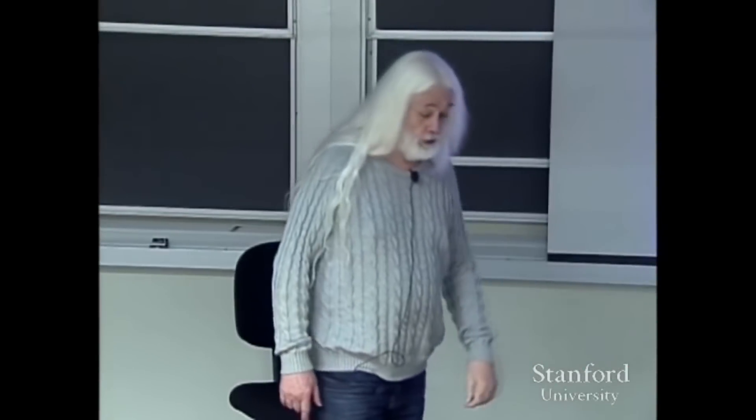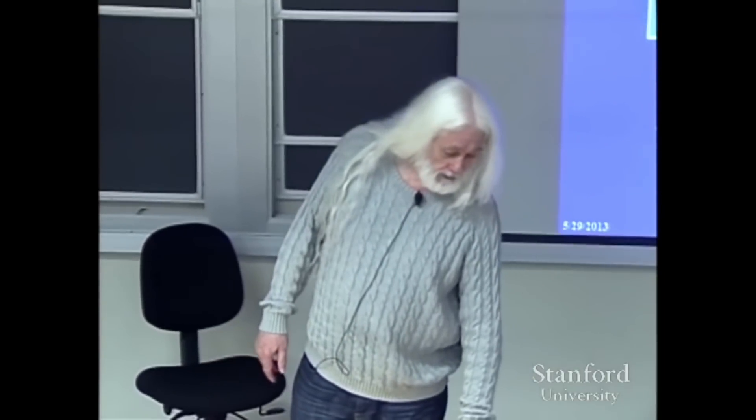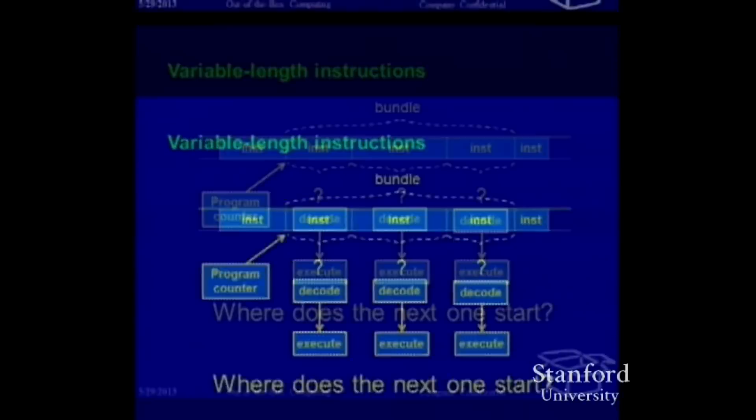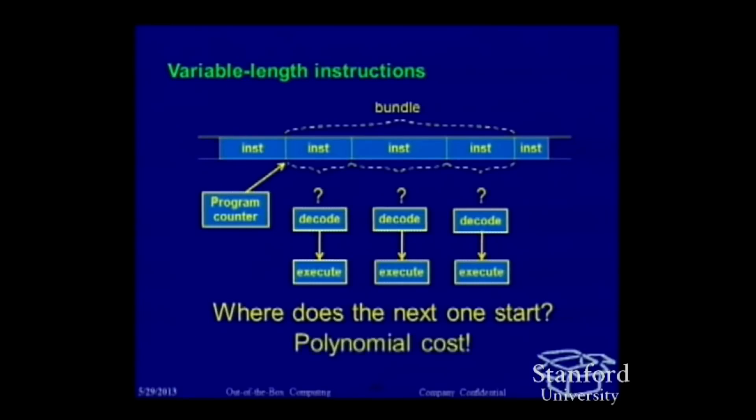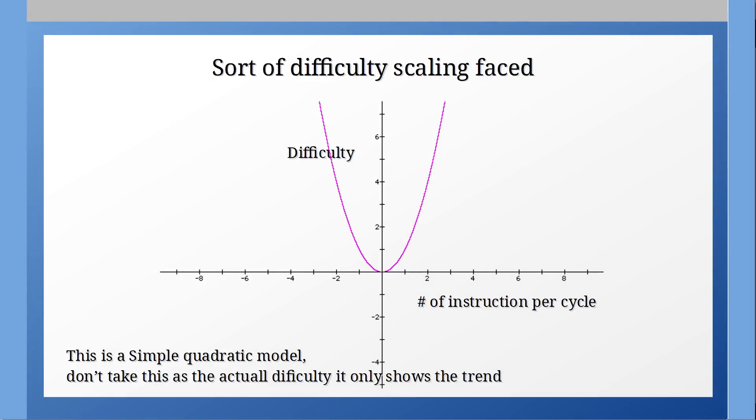We also need to be able to find the start points of each of the instructions within the bundle. That has polynomial cost. And this is one of the larger factors in x86's power consumption.